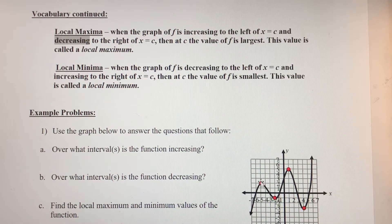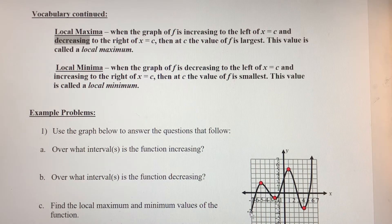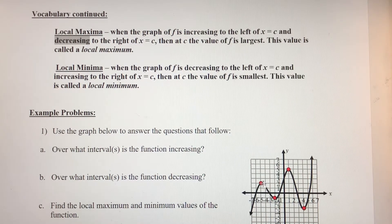This point in red is going to be considered a local maximum value because the function was increasing leading up to that point and it's decreasing after that point.